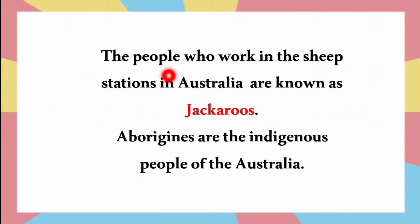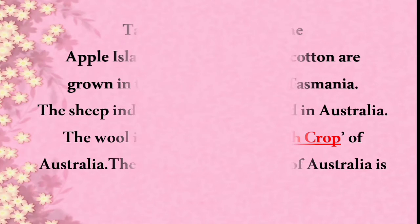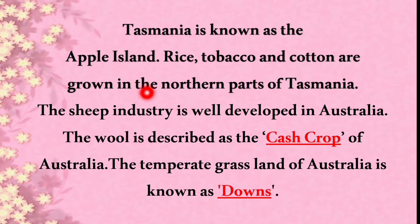The people who work in sheep stations in Australia are known as Jackaroos. Aborigines are the indigenous people of Australia. Tasmania is known as the 'Apple Island', and rice, tobacco and cotton are grown in the northern parts of Tasmania.